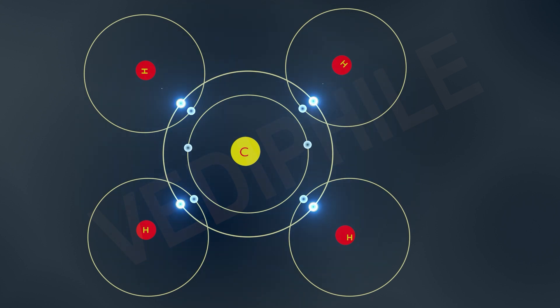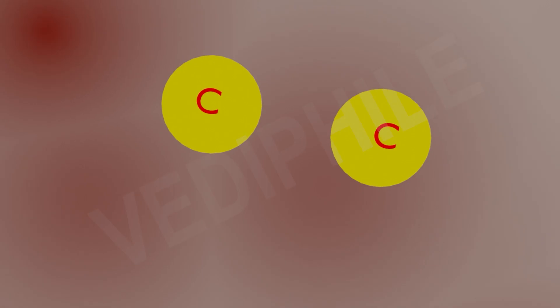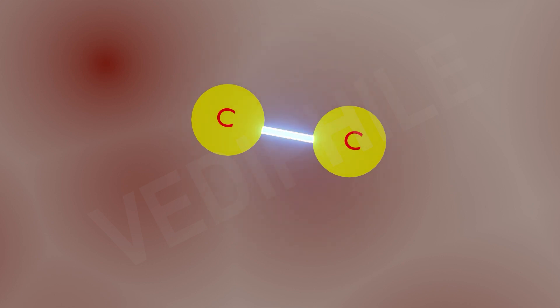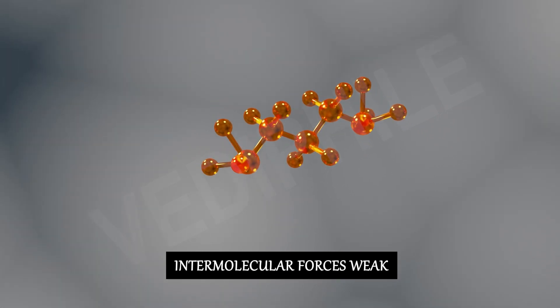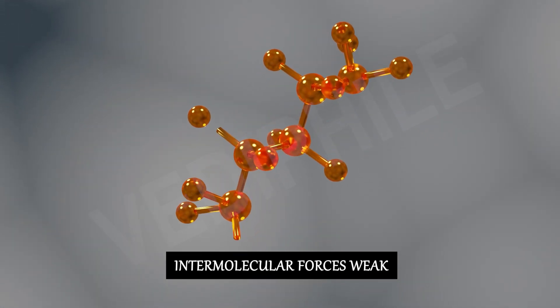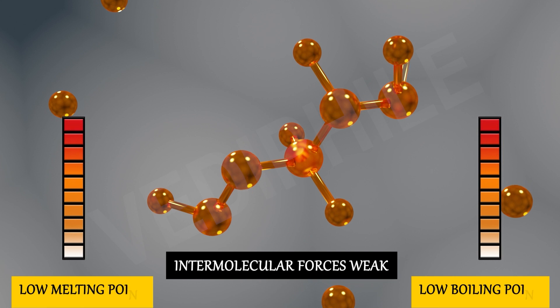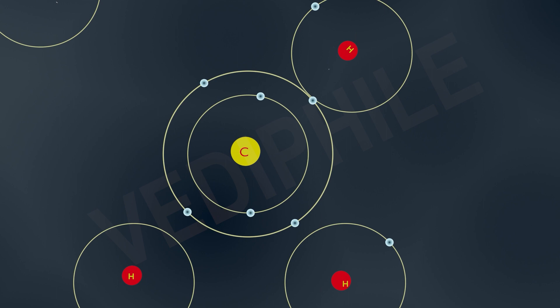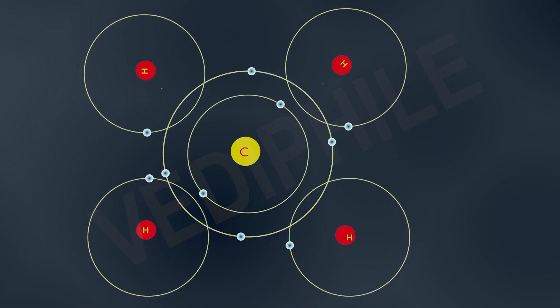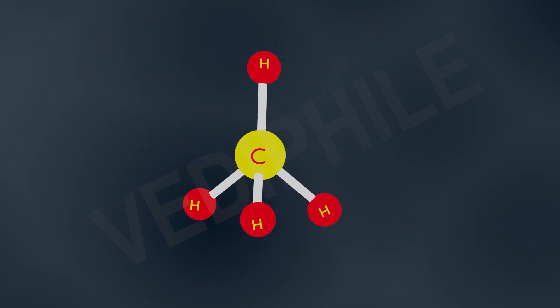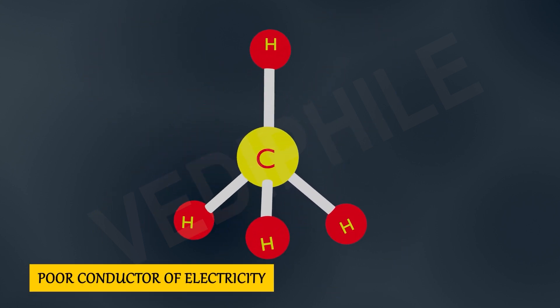Such bonds which are formed by the sharing of an electron pair between two atoms are known as covalent bonds. Covalently bonded molecules have strong bonds within the molecule but intermolecular forces are weak. This gives rise to the low melting and boiling points of these compounds. Since the electrons are shared between atoms and no charged particles are formed, such covalent compounds are generally poor conductors of electricity.